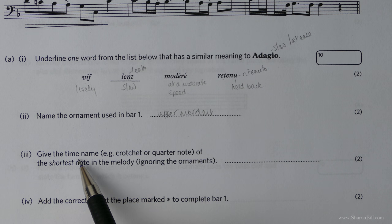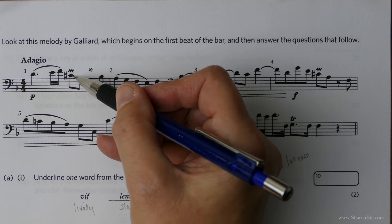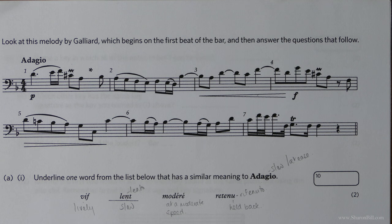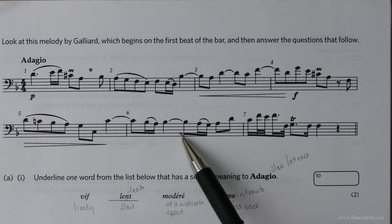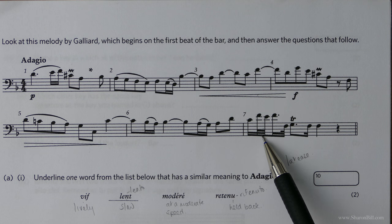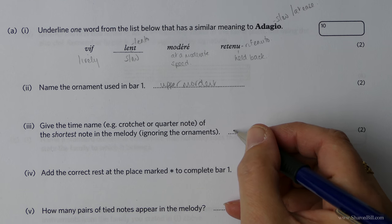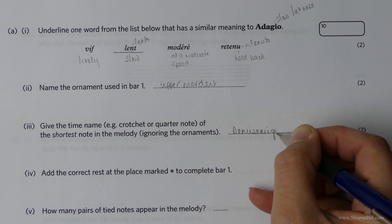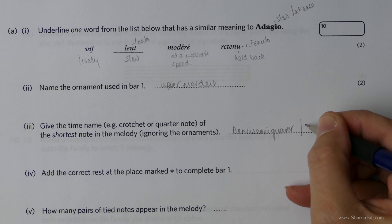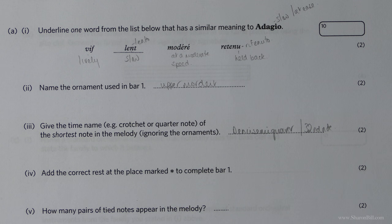Now let's give the time name of the shortest note in the melody, ignoring the ornaments. We've got semiquavers — 16th notes — appearing here. But here we can see we've got demisemiquavers, or 32nd notes, and they are the shortest. So we could either say demisemiquaver or 32nd note.